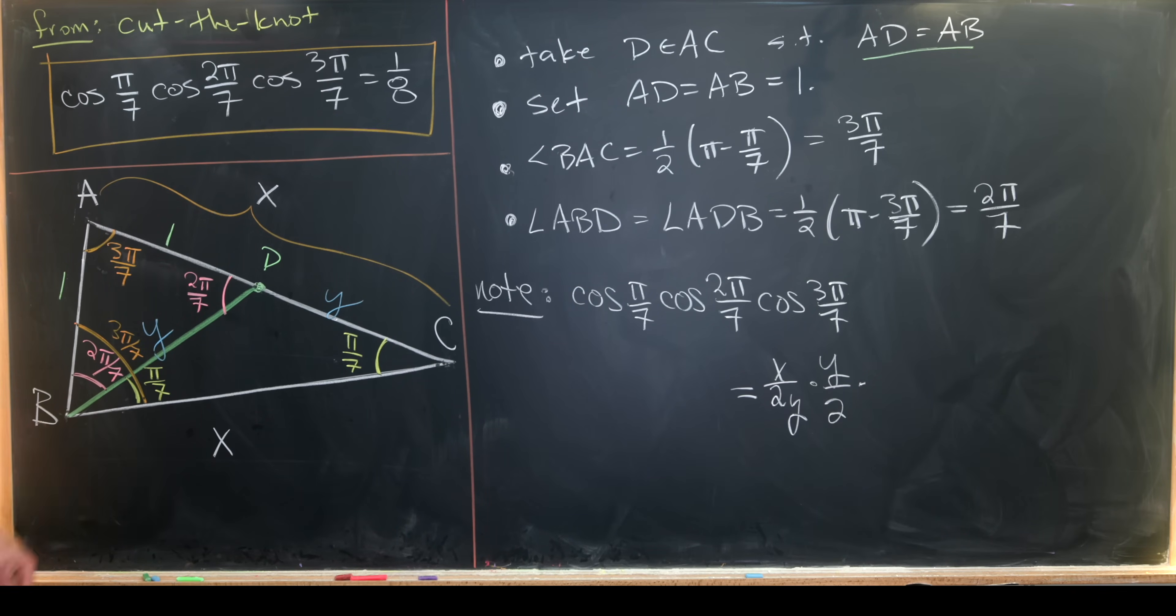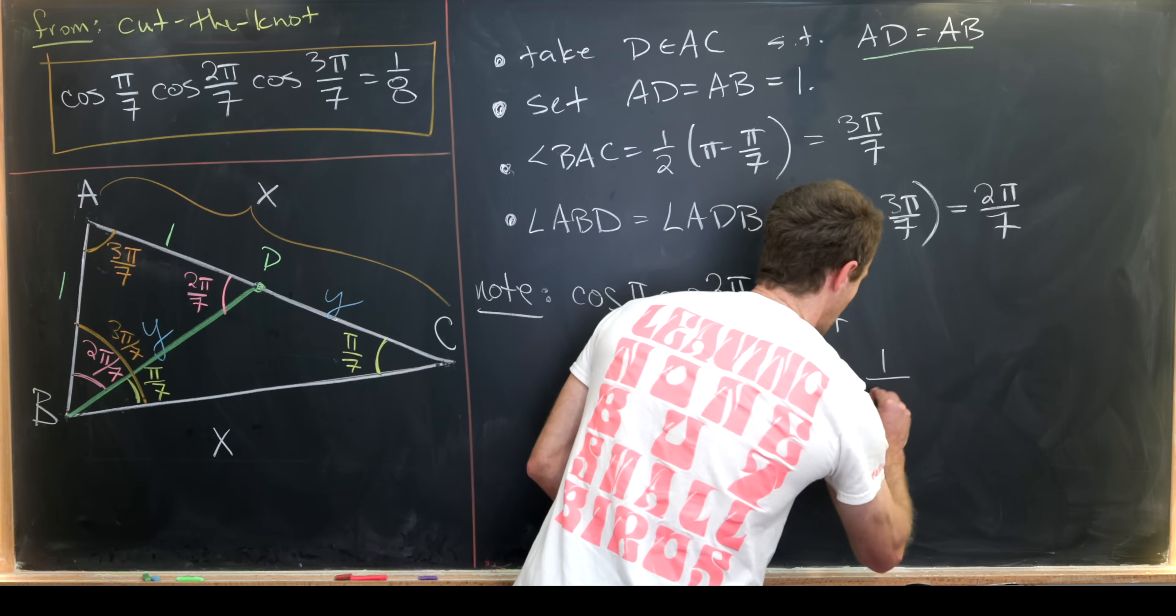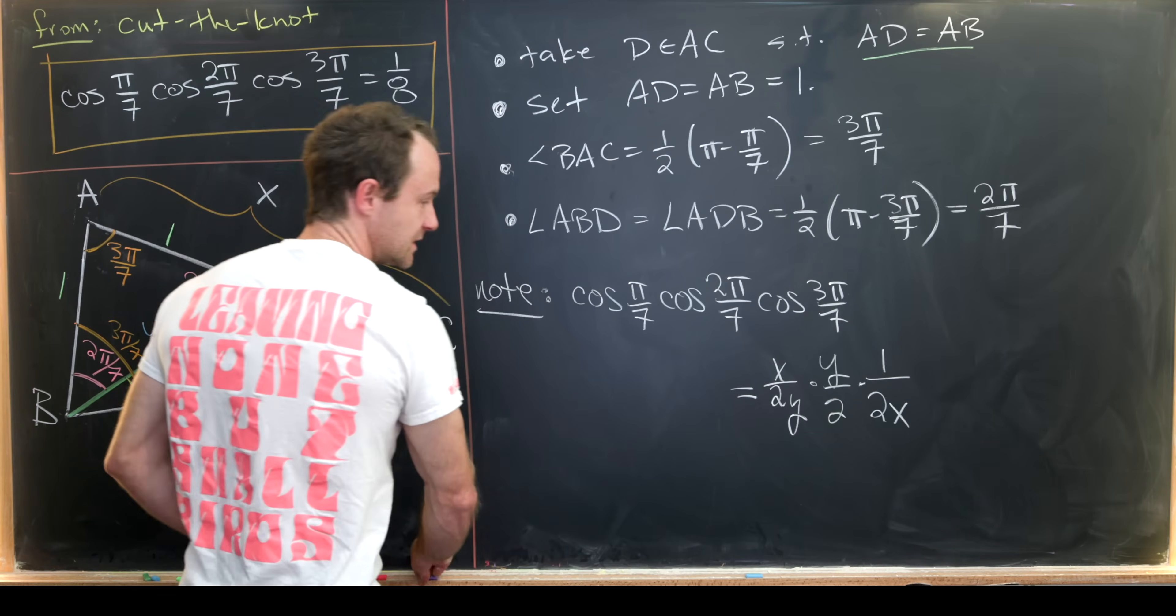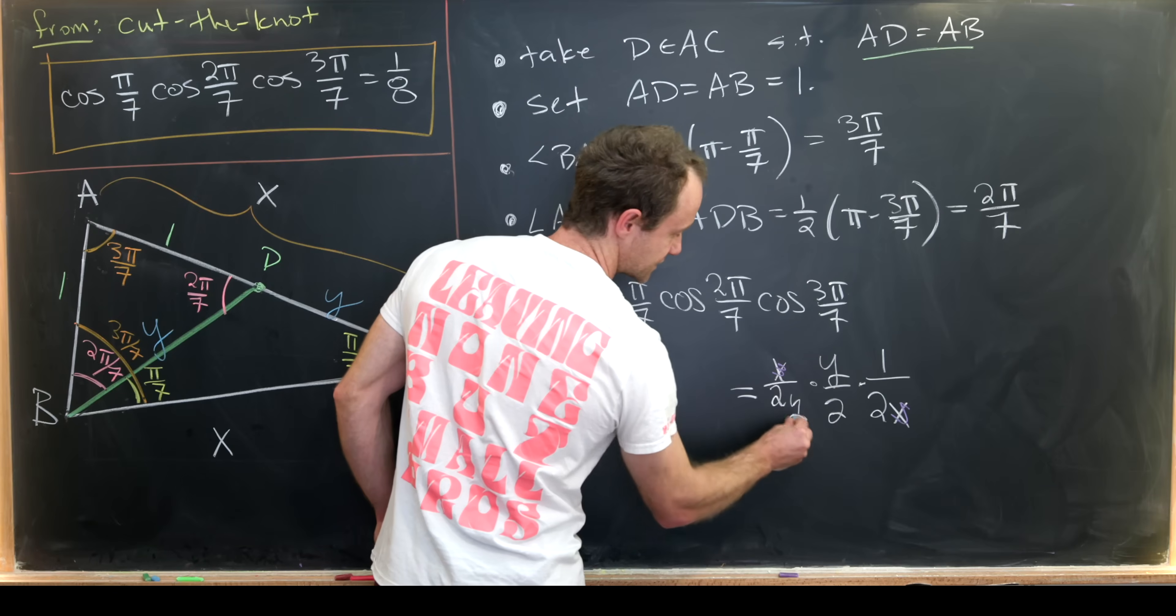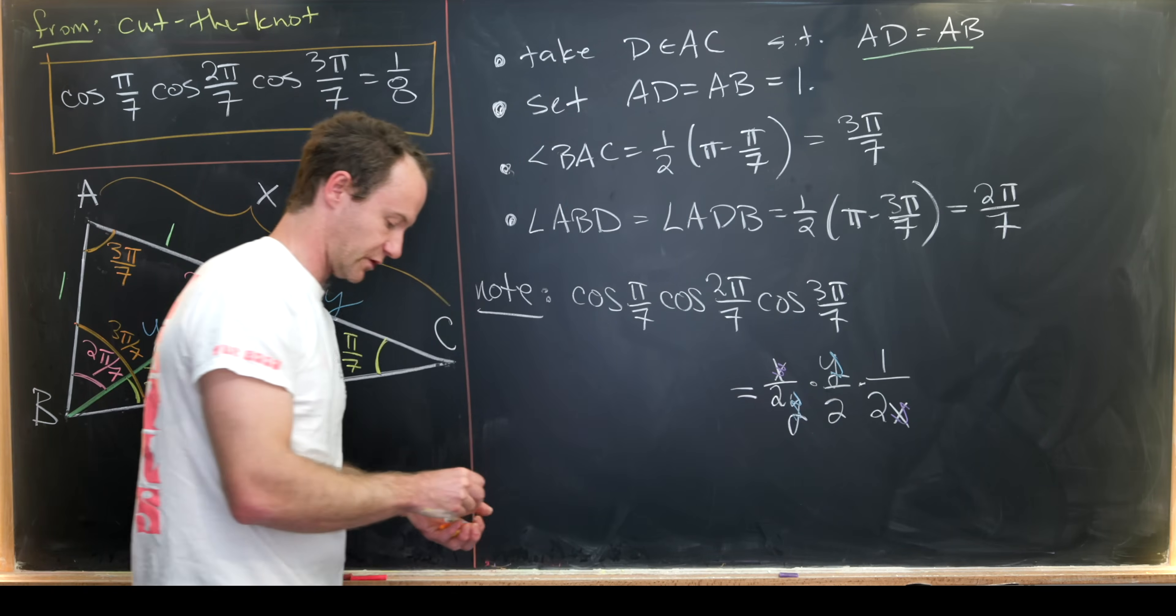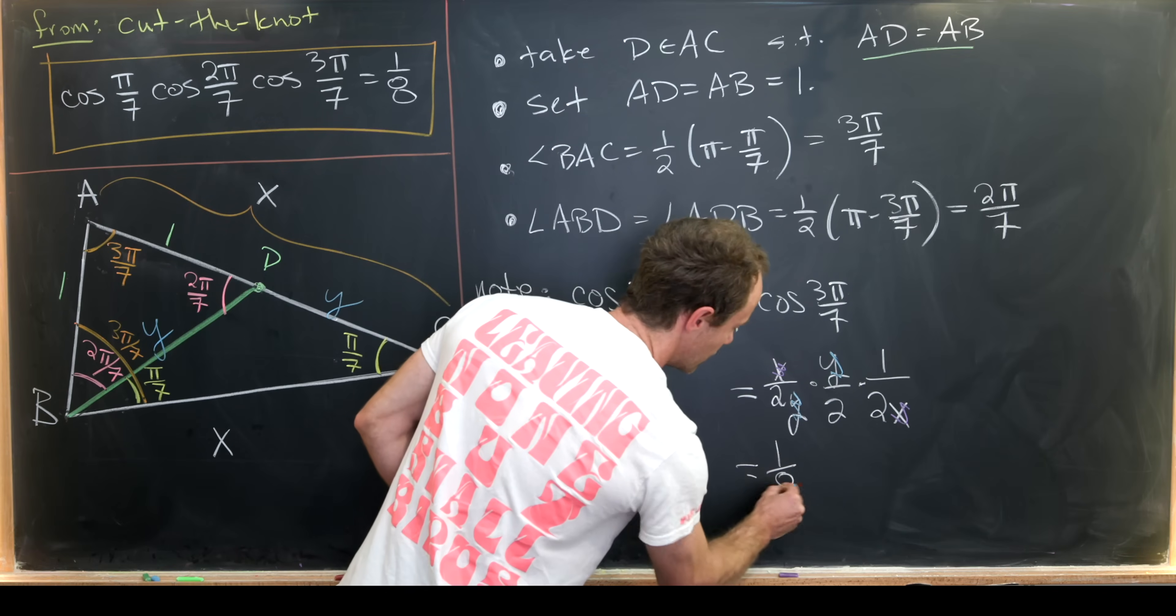So by the same calculation that we had before we see that that is 1 over 2x. So we have this as 1 over 2x. So let's notice this x cancels with this x. This y cancels with this y. And we're left with 1 over 2 times 2 times 2 or 1 over 8.